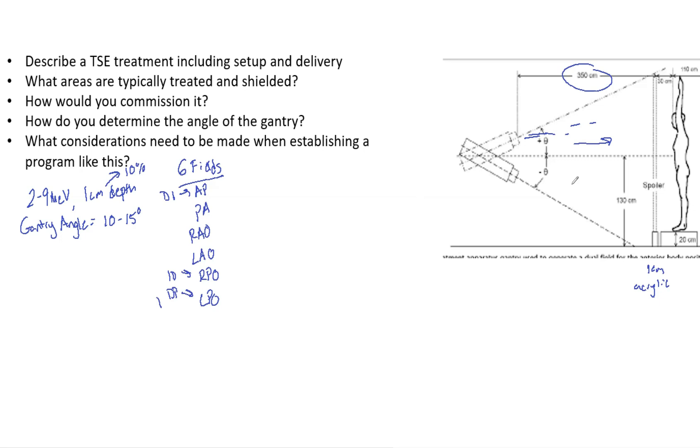fungoides, we're treating lymphomas, and that's why we certainly don't want that bone marrow tolerance to be exceeded. We talked about angle. A typical prescription is 36 Gy in 200 cGy times 18 fractions, two fractions per week.